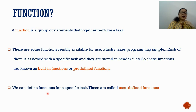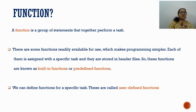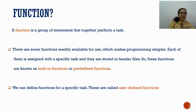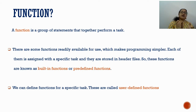The second type is user-defined functions. The user — the developer, the programmer — can define functions for a specific purpose. We can give a name to that function and set a particular task for it. Predefined functions are already defined in header files and we can use them as we wish. User-defined means the programmer creates the function and defines a name for it.